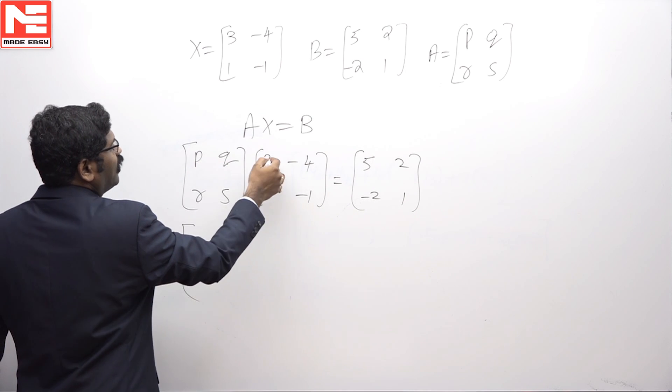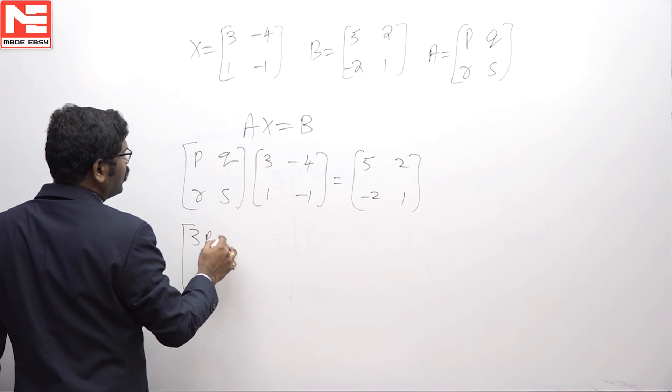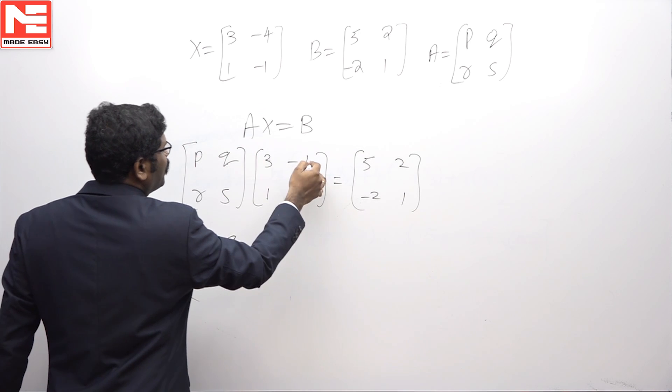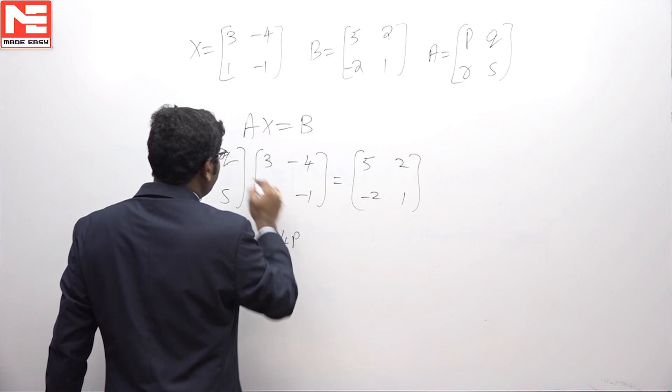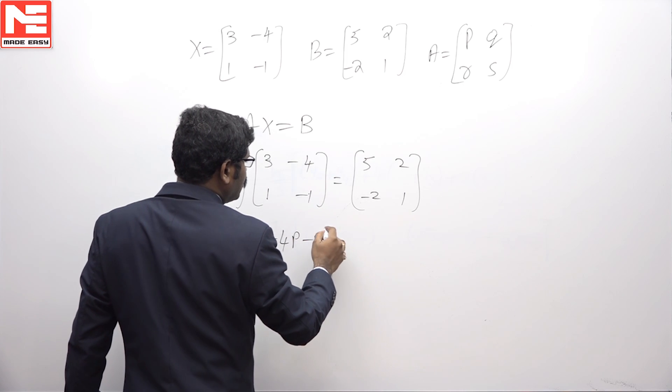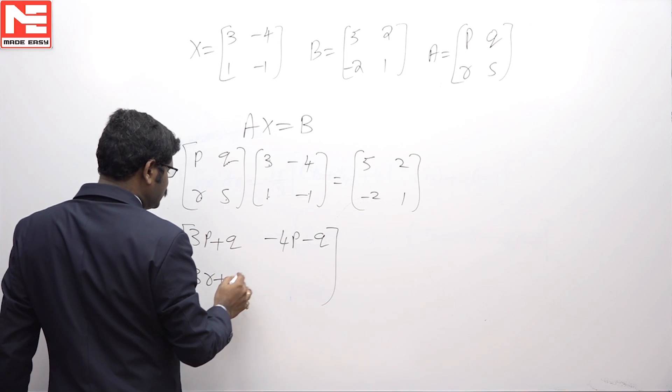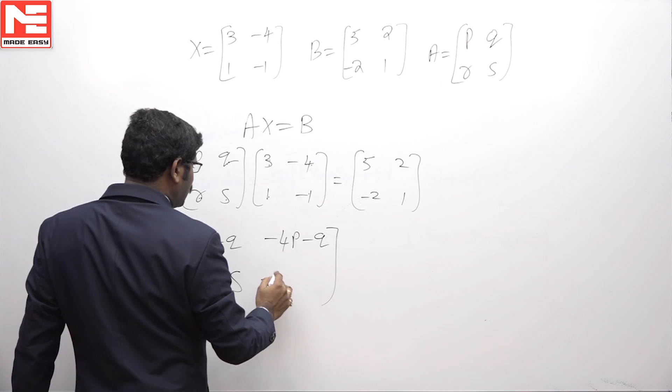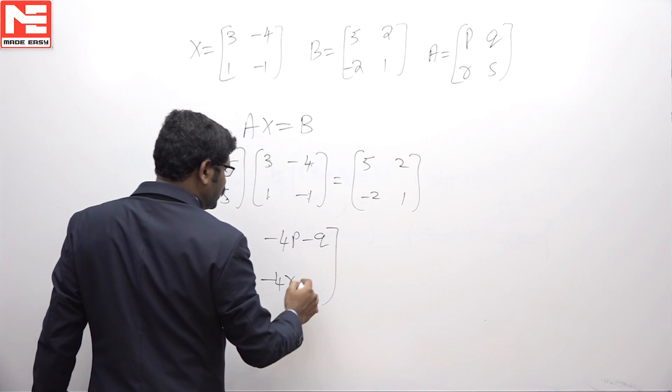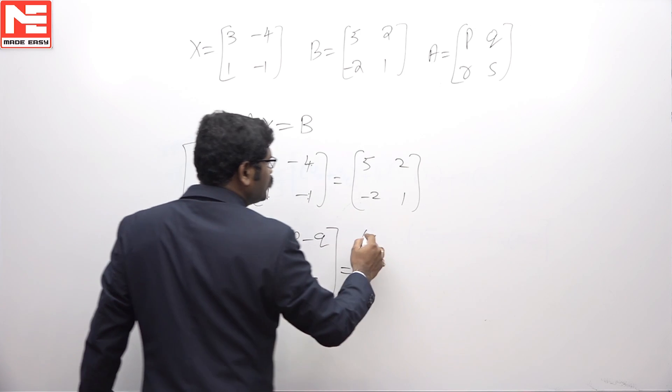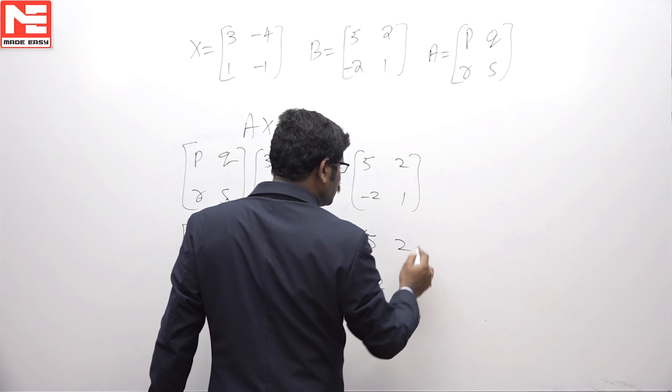Now, row with column, you will get 3P plus Q, minus 4P minus Q, 3R plus S, minus 4R minus S equal to 5, 2, minus 2, 1.